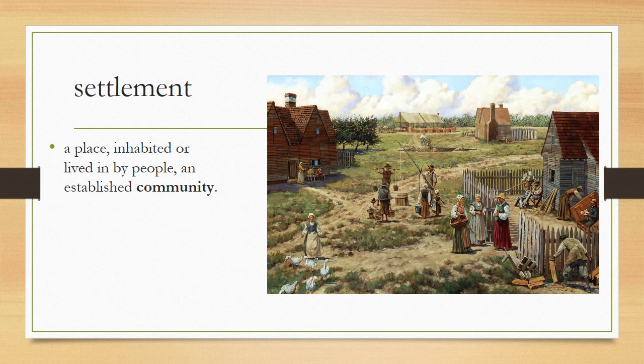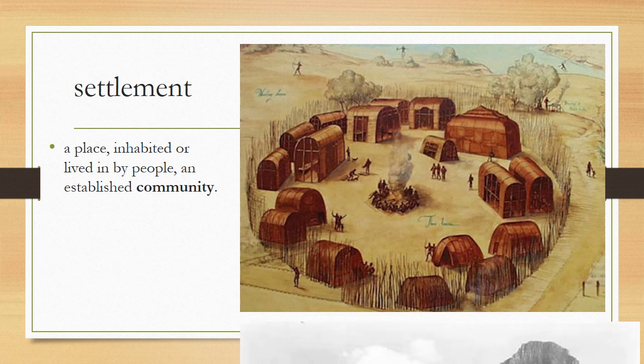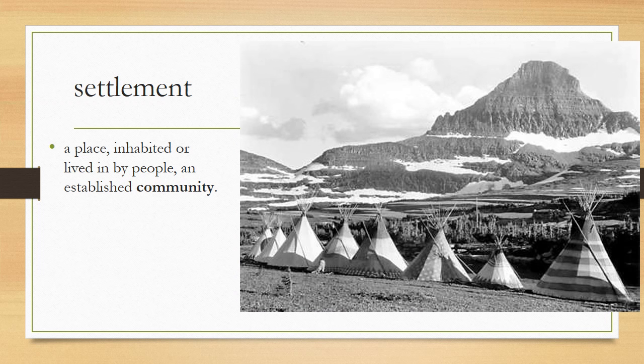The next word is settlement — a place inhabited or lived in by people, an established community. You're familiar with the Jamestown settlement shown in this picture. Native Americans also lived in settlements. Here is a watercolor painting done by John White in the 1500s about the Native Americans he found living in Virginia. Their longhouses are grouped together in a community — this is a settlement. Here's a settlement of teepees out in the Midwest.